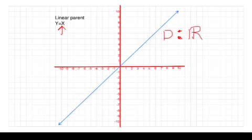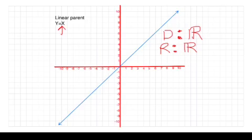The range is the possible y values we can get given our x values. Since y is always equal to whatever x is, and we can use any number for x, there's a possibility of getting any number for y. So the range is also all real numbers.